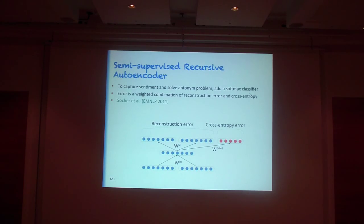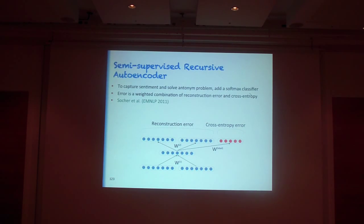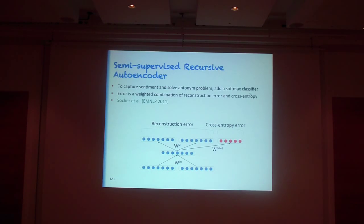So we can combine that idea with the softmax classifiers from part one, and train with a weighted combination of reconstruction error and the cross-entropy loss from a standard softmax classifier. That will help us capture sentiment problems, as introduced at EMNLP in 2011.